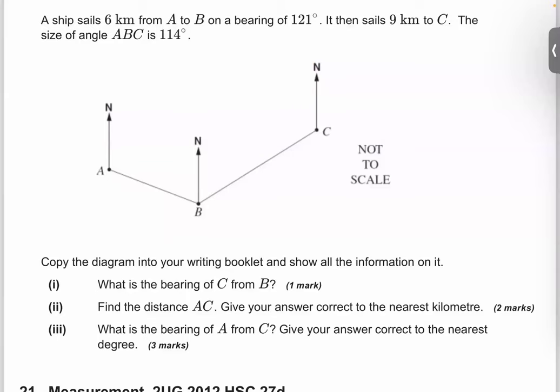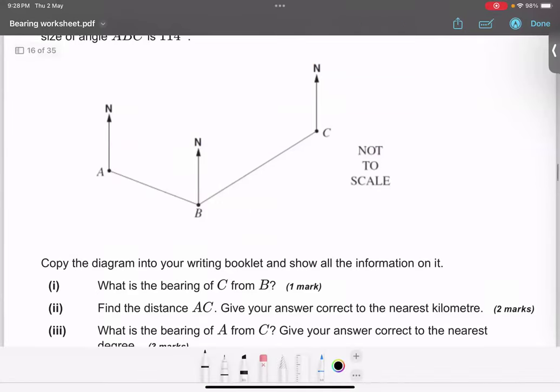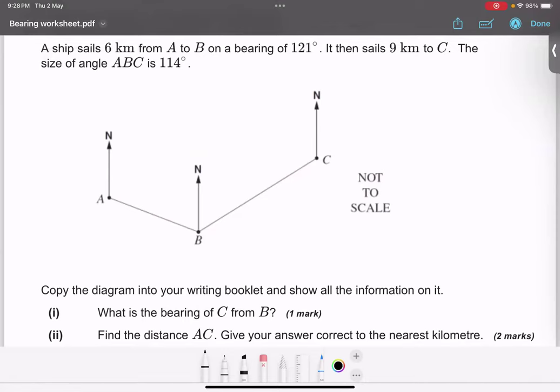In this question a ship sails 6 km from A to B. Whenever we are saying from A, that means that is our north. And always remember when we are doing north, extend the north line a little bit longer down. From A to B that is 121. So this particular angle is 121 degrees. And the distance is 6 km.